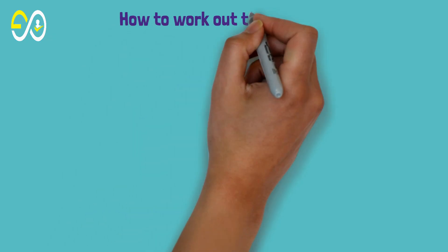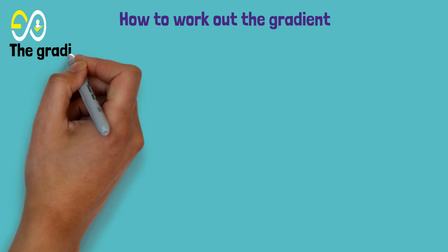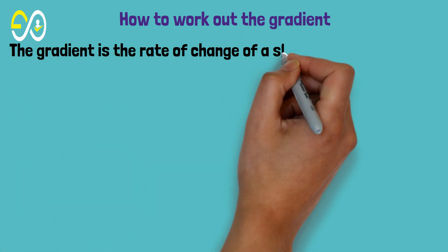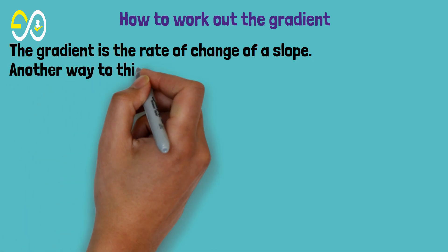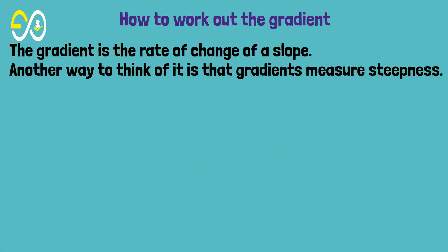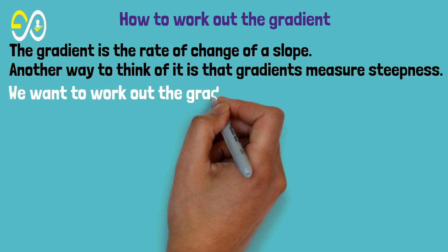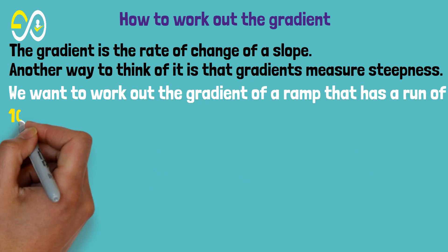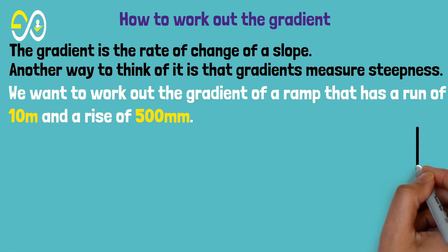How to work out the gradient? The gradient is the rate of change of a slope. Another way to think of it is that gradients measure steepness. We want to work out the gradient of a ramp that has a run of 10 meters and a rise of 500 millimeters.